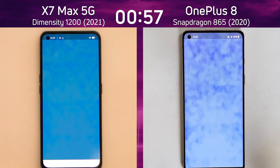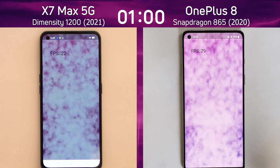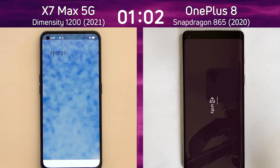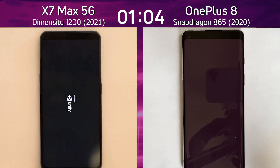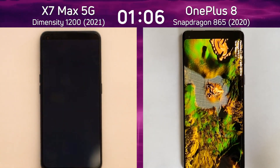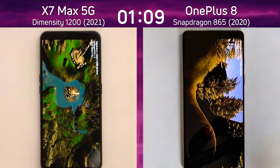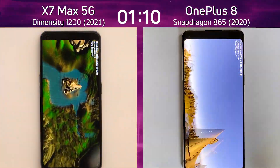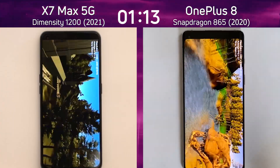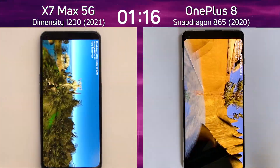We're about to go into the smoke particle test where we're going to see some 2D graphics. The Realme X7 Max was definitely quicker into the smoke particle test — 22 on the left, 29 on the right — so better graphics there. But the OnePlus 8 was now in the lead again, so we've had a swap: OnePlus 8, then Realme X7 Max, then OnePlus 8 again.